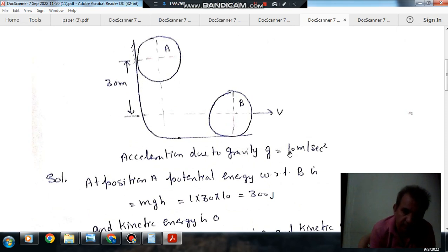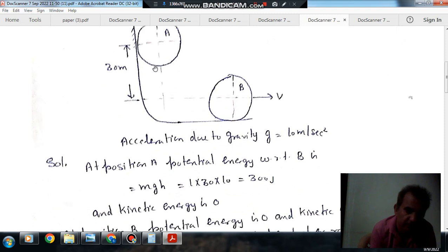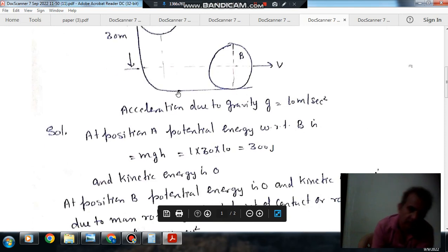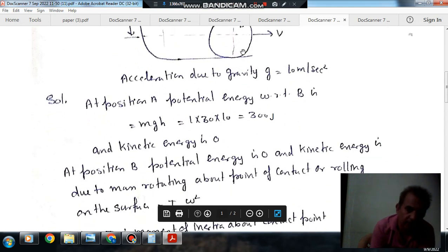Acceleration due to gravity g equals 10 meters per second squared. So at this position, the disk has only the potential energy connected with zero kinetic energy. So MGH equals 1 into 30 into 10. So g is 10, mass is 1 kg, and H equals 3. So it comes out as 300 joules. And kinetic energy is 0.